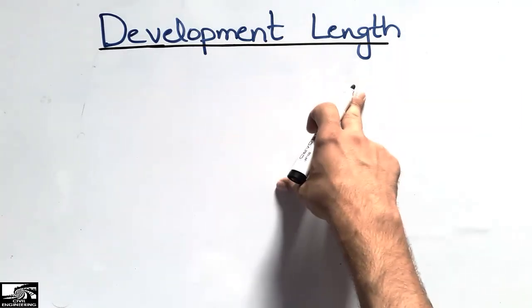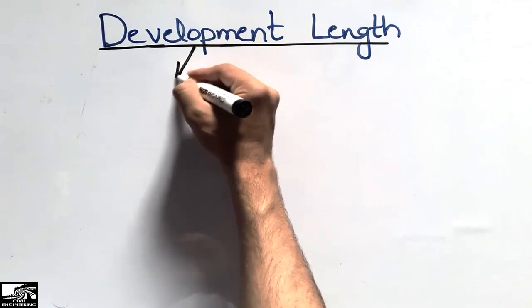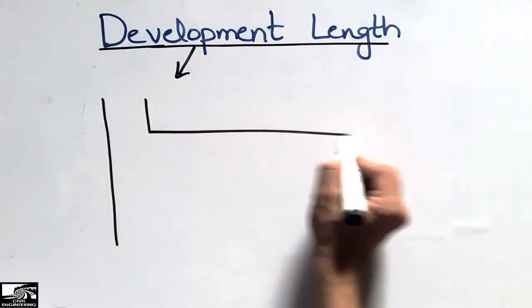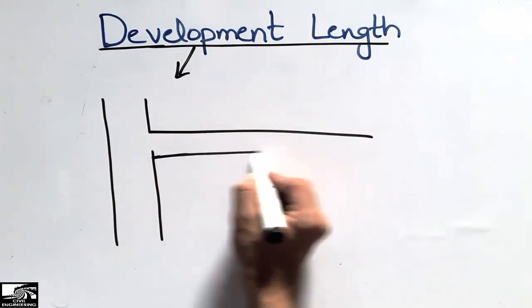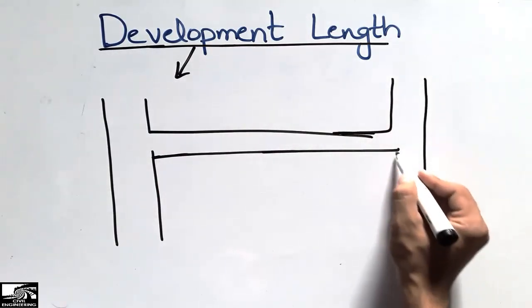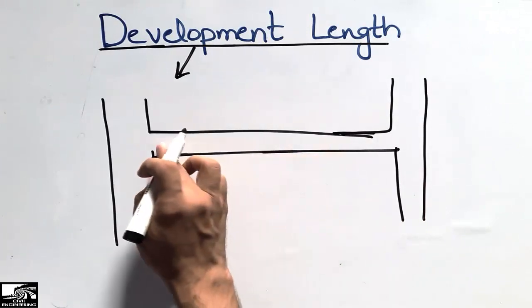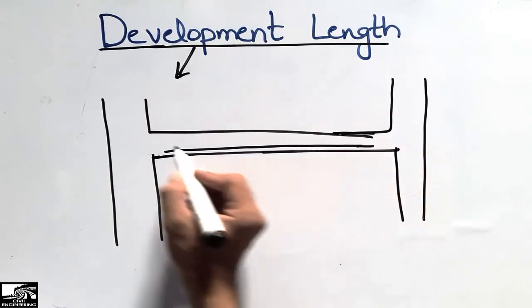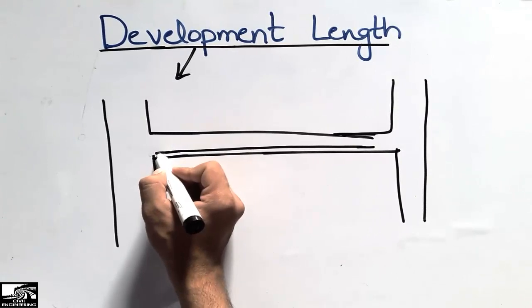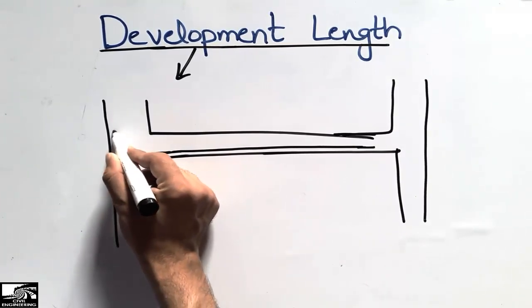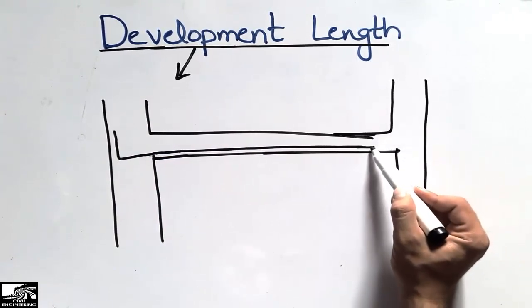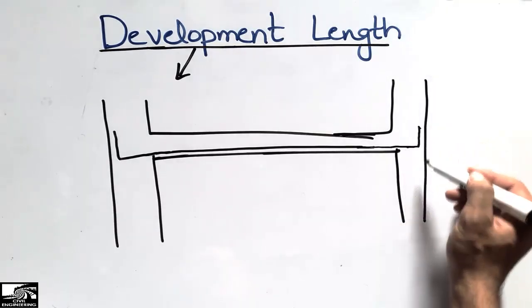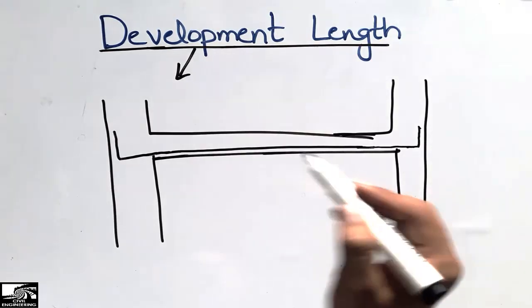First, to define the development length, I will explain this by taking an example of a beam-column connection. Consider this is the column and beam connection, with another column on the right side. When reinforcement is placed in the beam in the tension zone to resist tensile stresses, this reinforcement is embedded from the beam into the column.